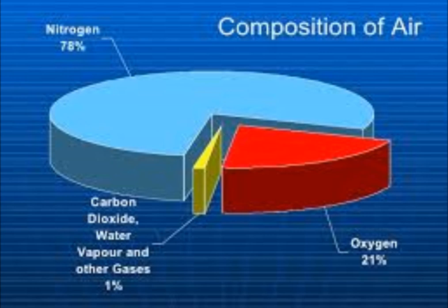Nitrogen is the most abundant gas present in the air. In the absence of nitrogen in the air, even small fires can become uncontrollable. It is also required for the growth of plants. Oxygen is important for all living things to breathe and survive.